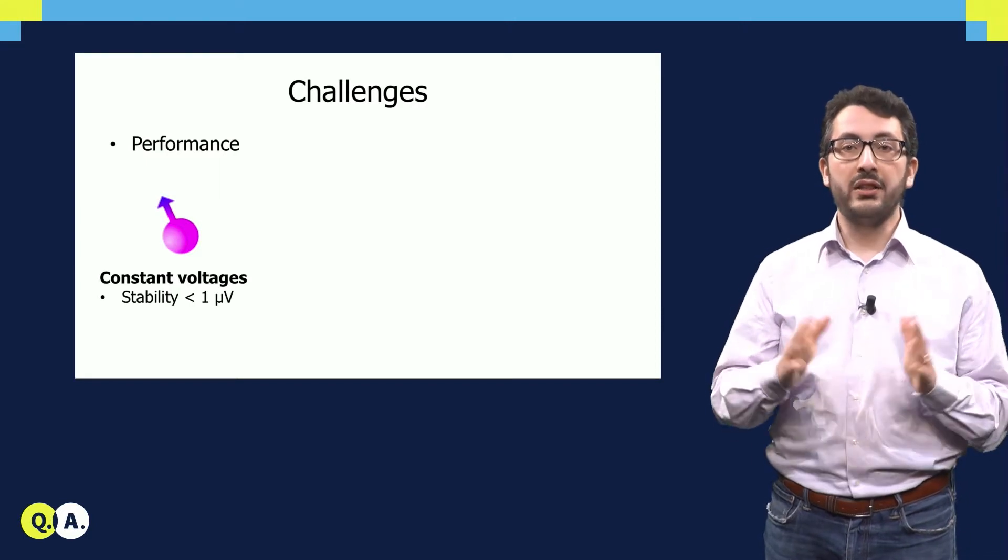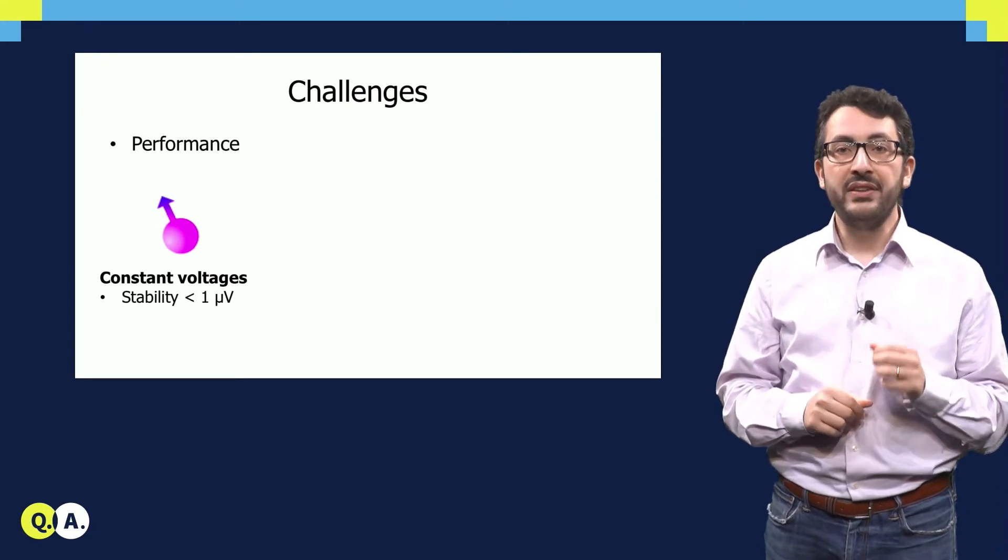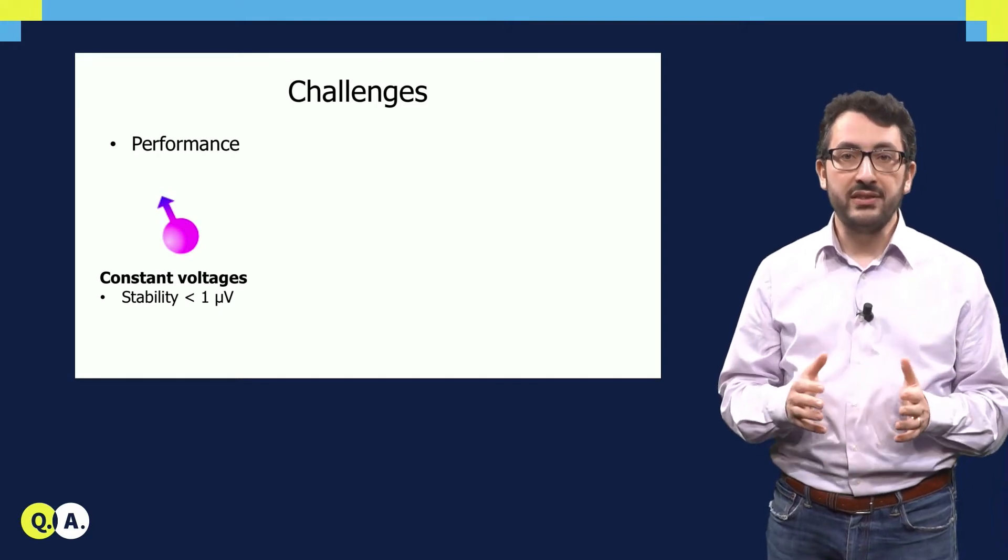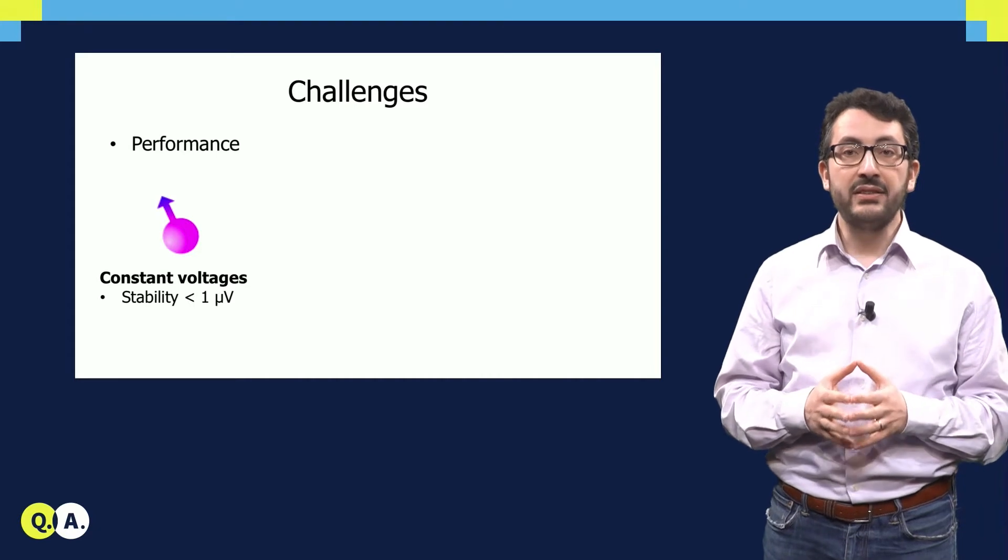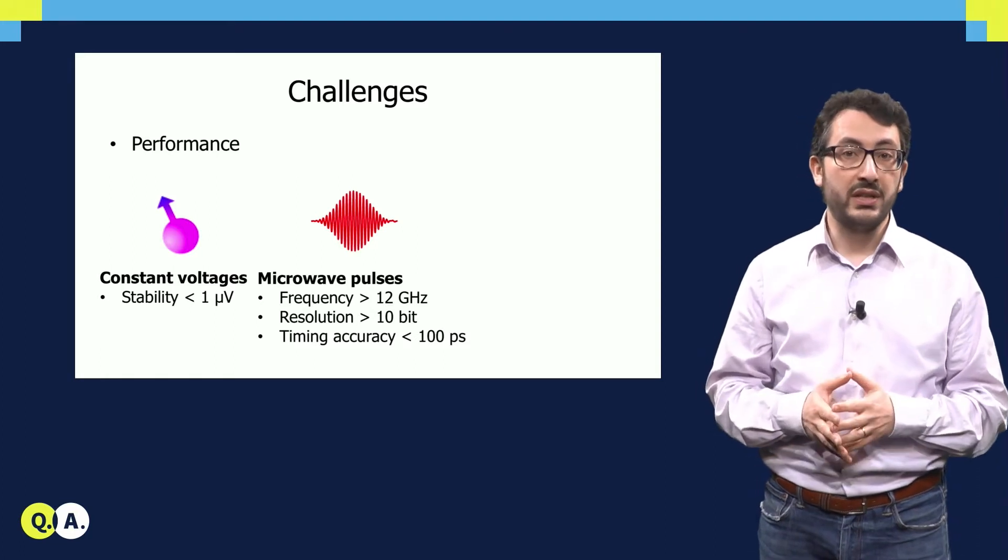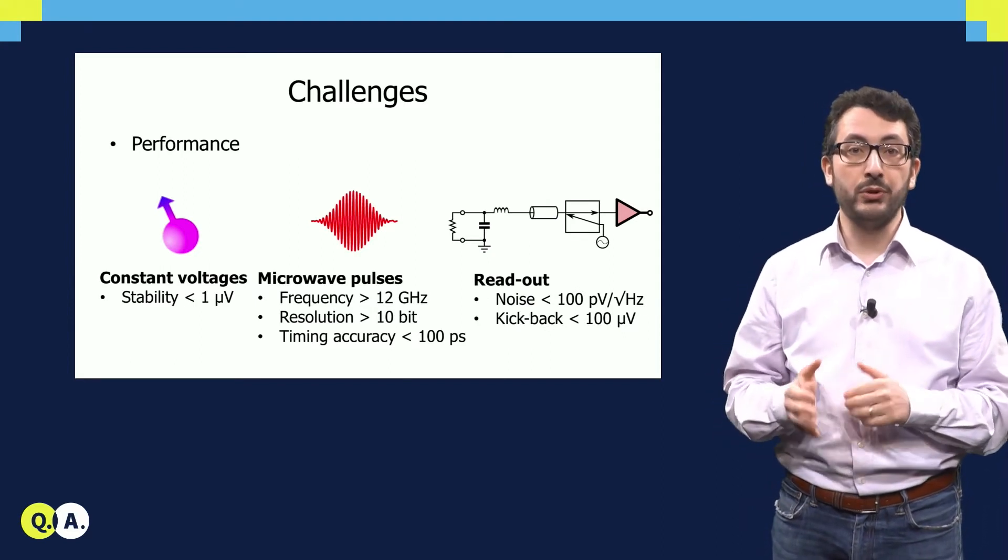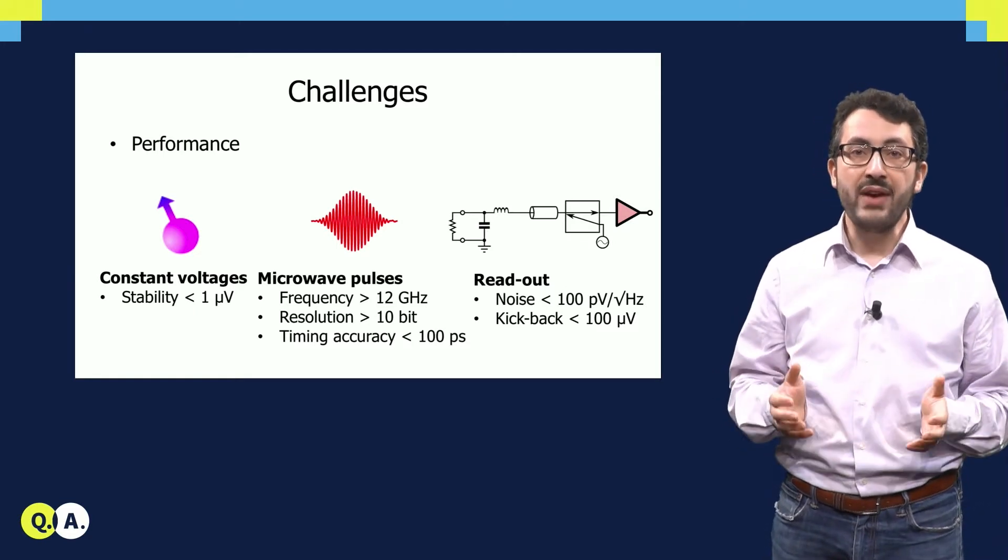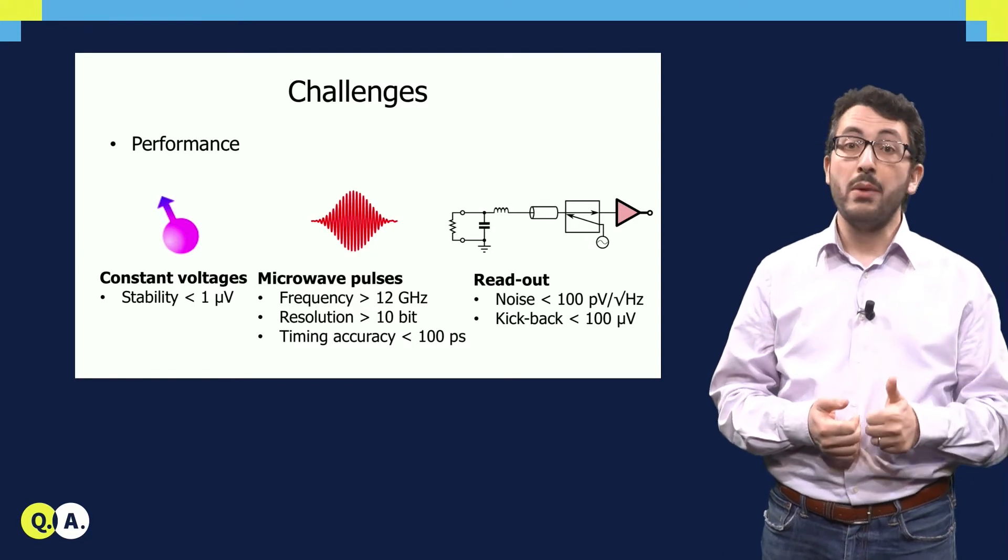Now to implement all that, we have to face a number of challenges. First, all of the electronic controller needs to achieve very tight performance. If you think to the example of the spin qubits, just to let the qubit exist, you need to provide constant voltages with a very tight stability, well below 1 µV, which means better than one part per million. We need also to provide microwave pulses with very tight accuracy in terms of amplitude and timing. And you need to build a readout with very low noise, much better than what is possible today, while at the same time avoiding any kickback. That means avoiding any effect back to the qubit because you want to avoid spoiling the quantum state. So that's the first challenge, meeting the performance.